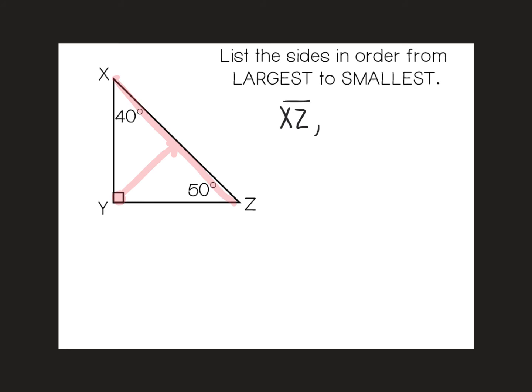Our second largest angle is 50. Opposite of that is side XY. And lastly, our smallest angle is 40, opposite of that is side YZ.